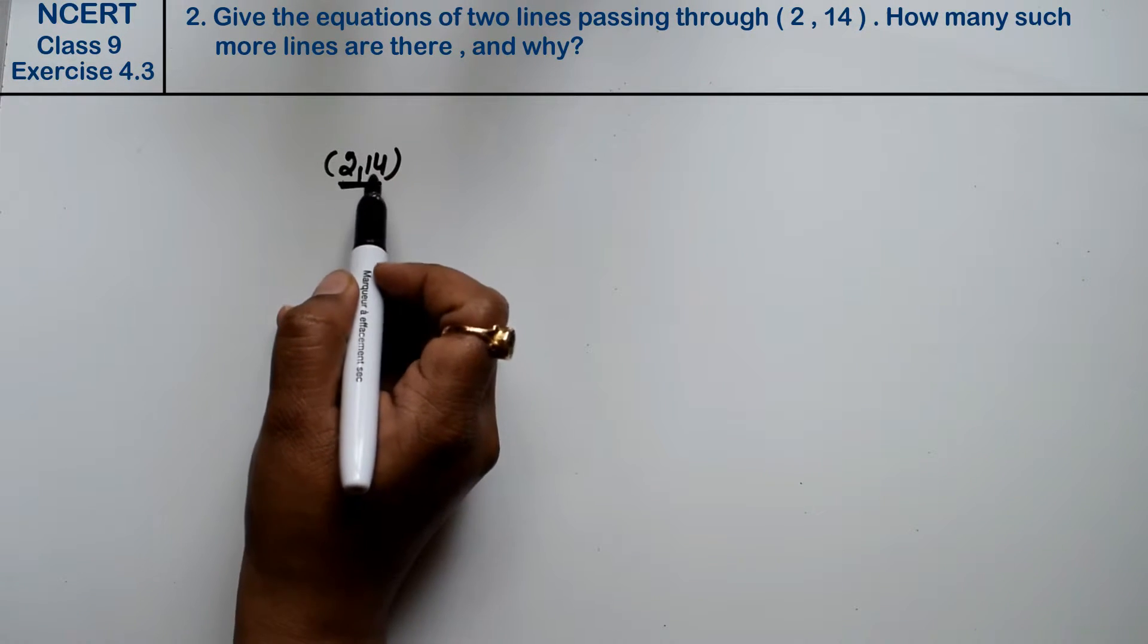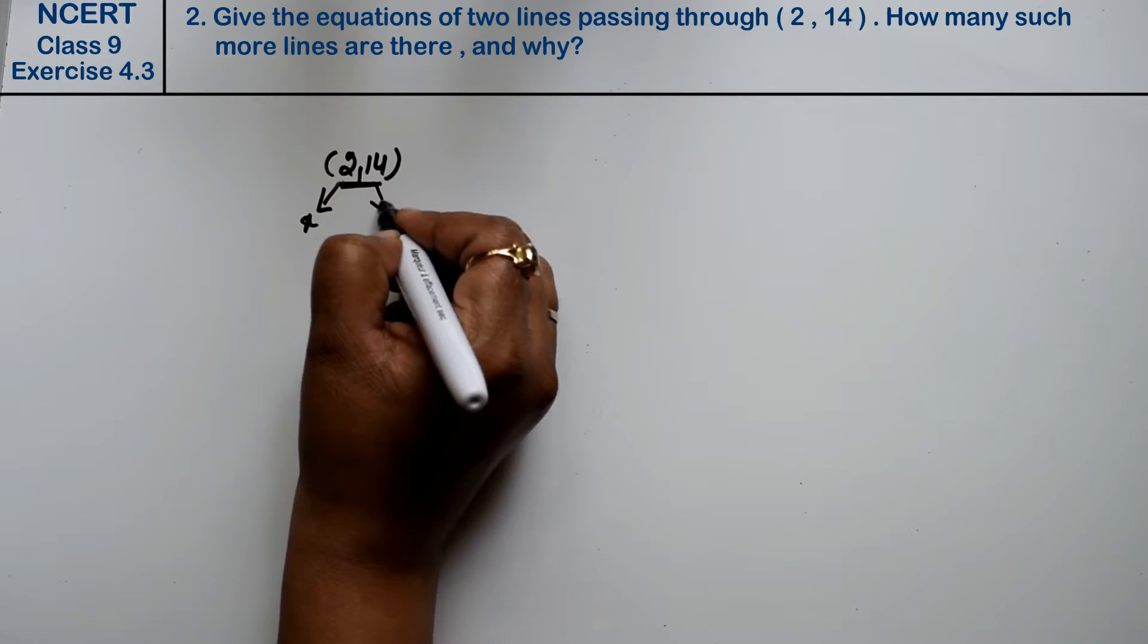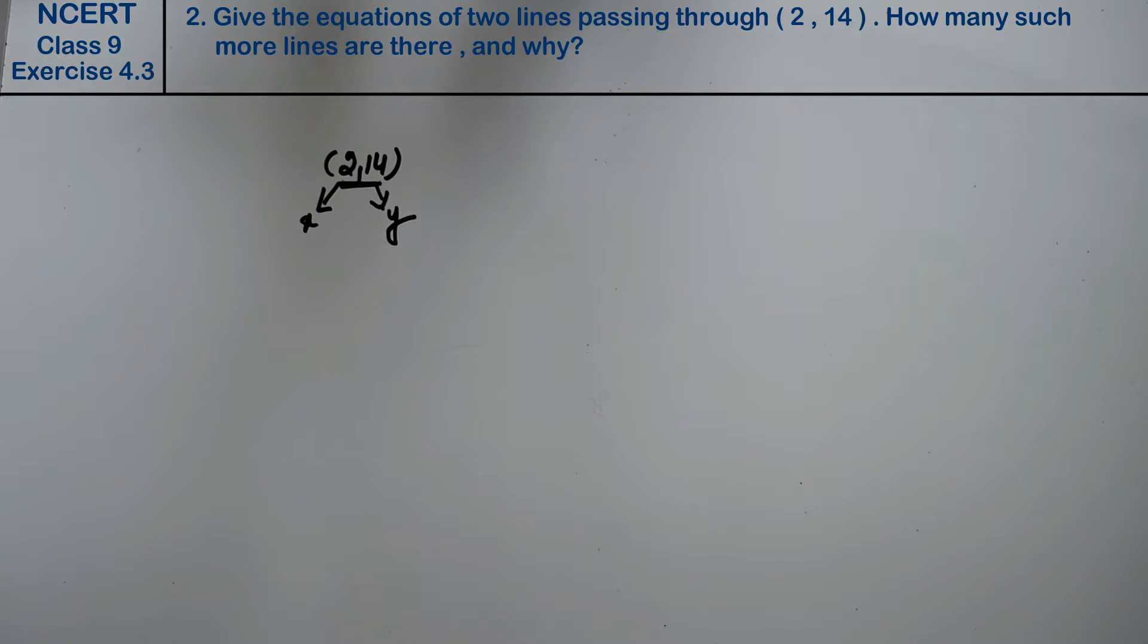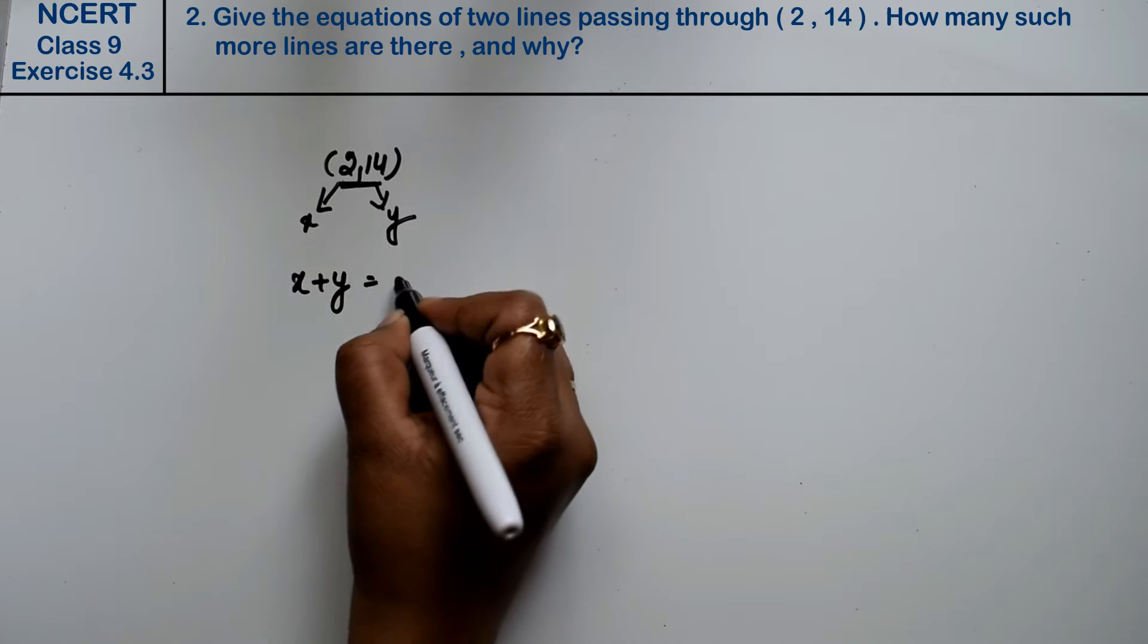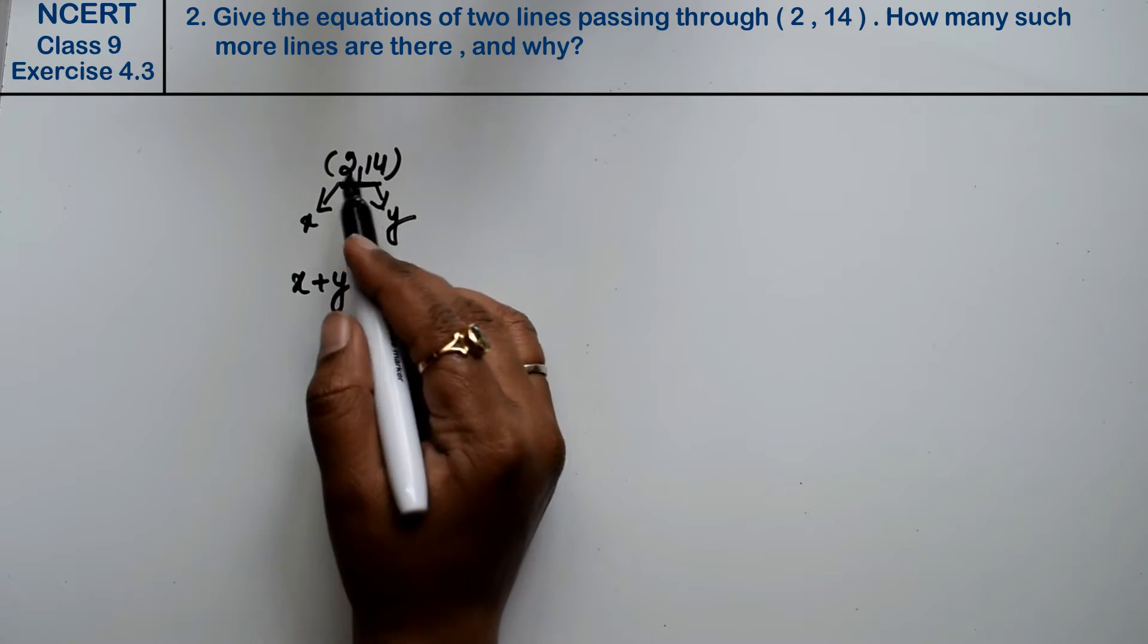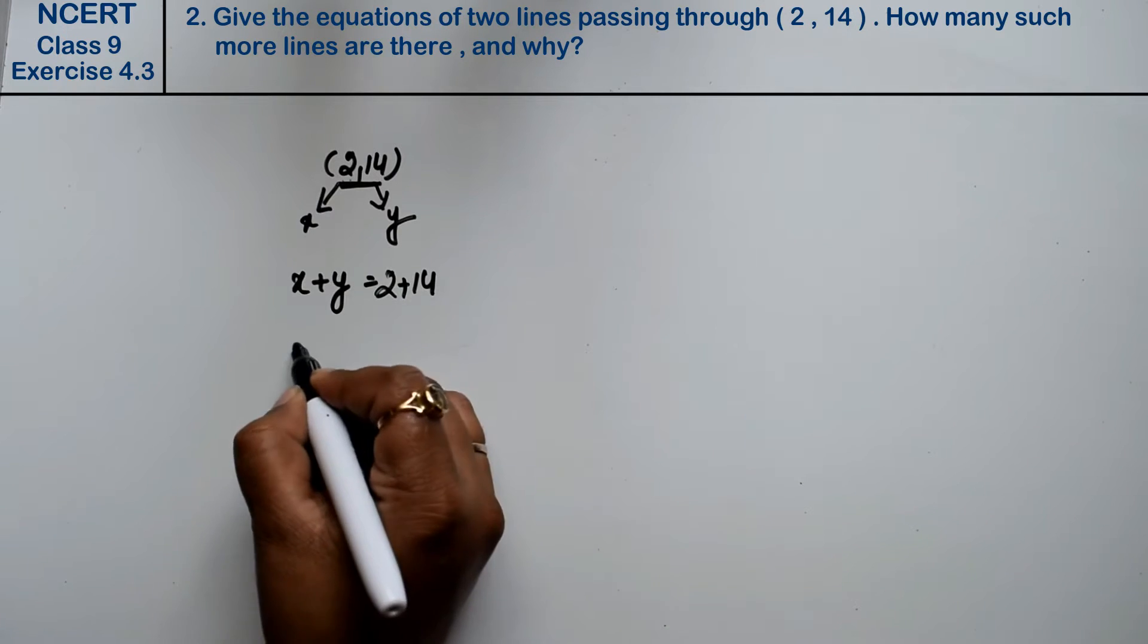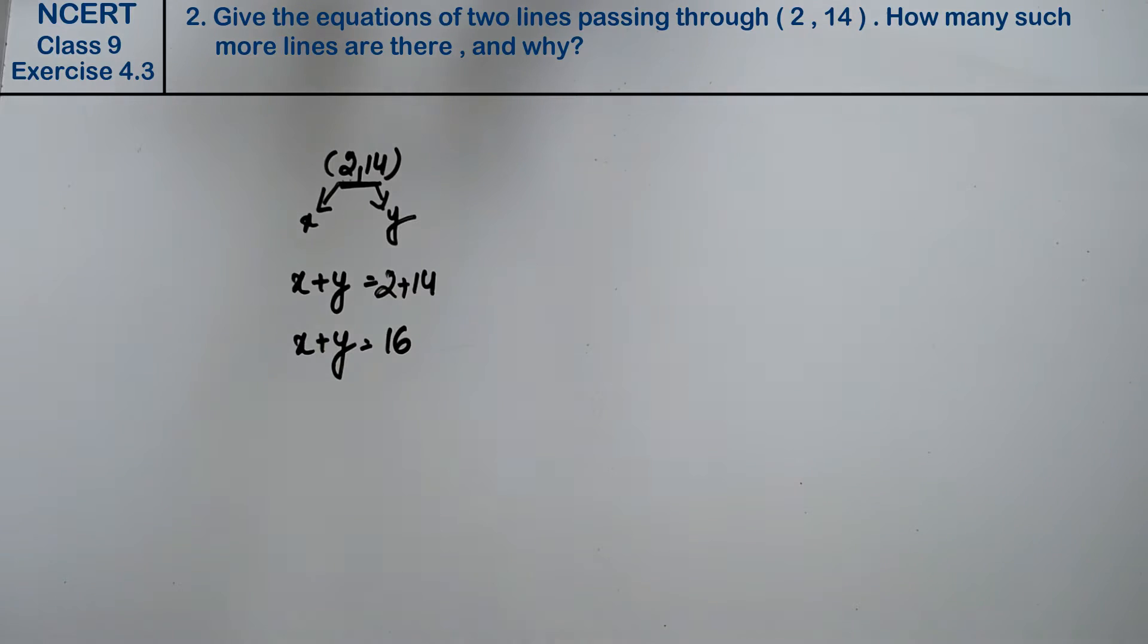Now, we have (2, 14). The first value is x and the second value is y. If I make the first equation: x plus y equals what? x is 2 plus y is 14, so x plus y equals 16, right friends?